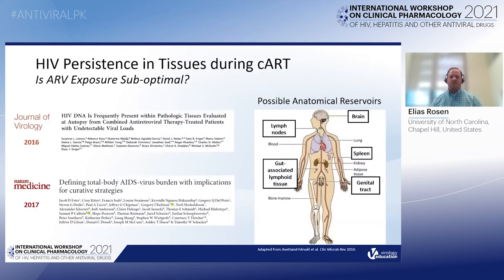While combination antiretroviral therapy leads to durable suppression of virus in plasma, a series of recent papers have shown that there's a burden of HIV that persists in tissues, with preferential accumulation in a series of possible anatomical reservoirs, primarily lymphoid tissue.